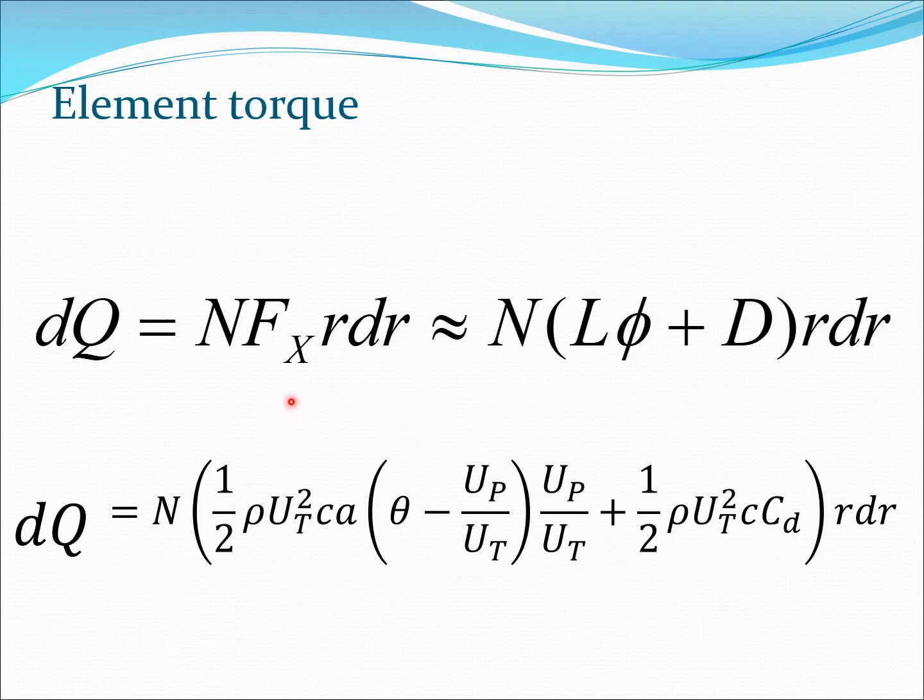Let's now turn our glance to the torque. The torque is the force in the plane of rotation into the moment arm r into the number of blades N. We write this as L phi plus D, where D is the component coming completely from drag, that is CD. And L phi is essentially because of the lift generated part of drag, so this is essentially the induced drag type of component.